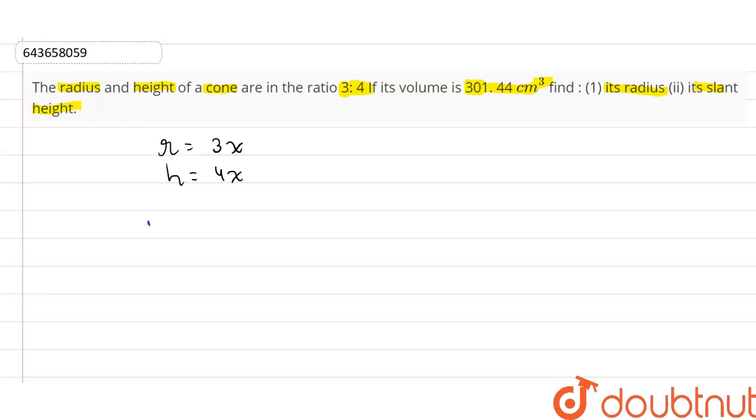We know that the volume of the cone is given by (1/3)πr²h. In this case, we have the volume and we have r and h in terms of x. So if we find x,